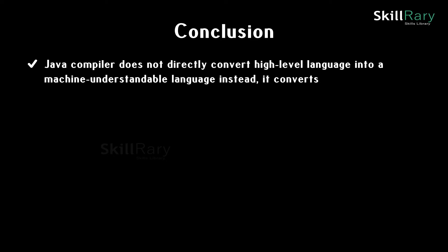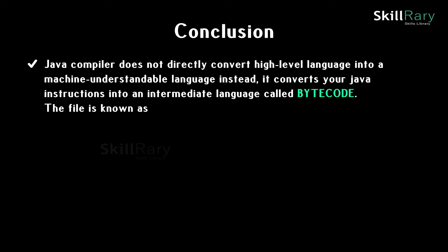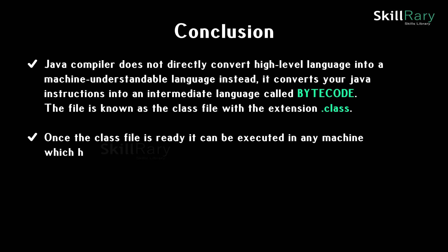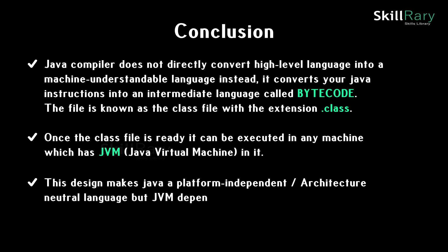The final conclusion: the Java compiler does not directly convert high-level Java into machine-understandable language. Instead, it converts Java instructions into an intermediate language called bytecode, stored in a class file with the extension .class. Once this class file is ready, it can be executed on any machine — even a mobile phone — that has a JVM installed. This entire design makes Java a platform-independent, architecture-neutral, but JVM-dependent language.